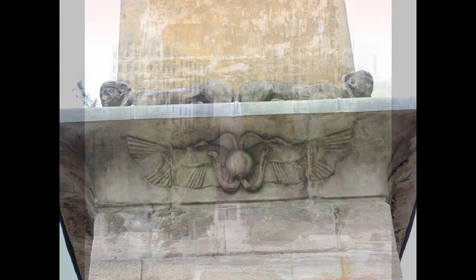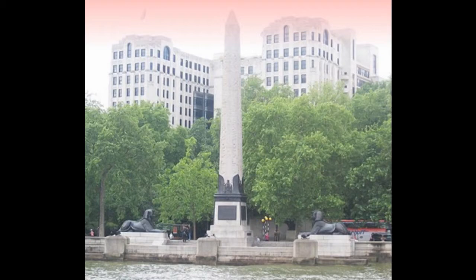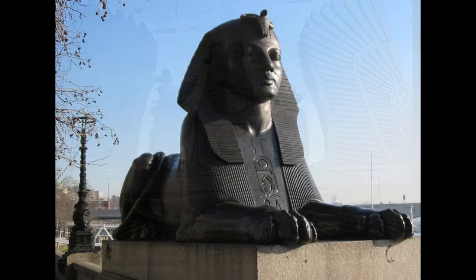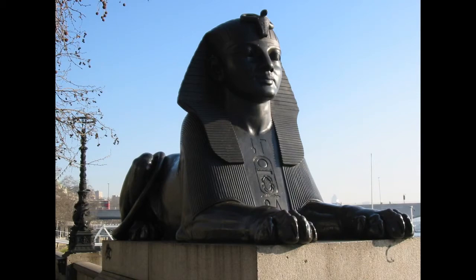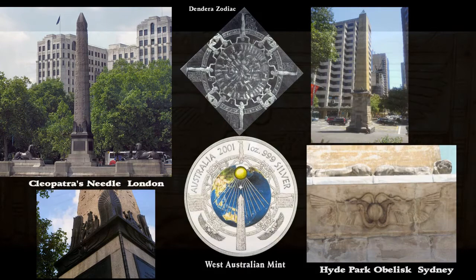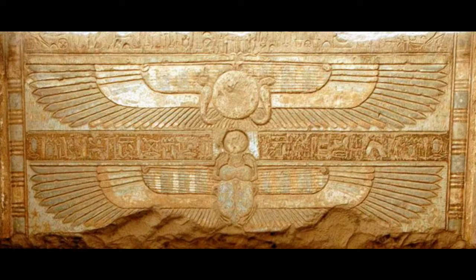The Sydney obelisk shares connections with Cleopatra's Needle in London. They are both guarded by sphinxes — in London's case, the sphinxes are on the ground — and both feature the winged disc. The sculptures and the collar with the winged disc on Cleopatra's Needle are relatively new additions. Cleopatra's Needle in London is from the ancient city of Heliopolis; it was moved by Cleopatra around the 1st century BC to Alexandria.